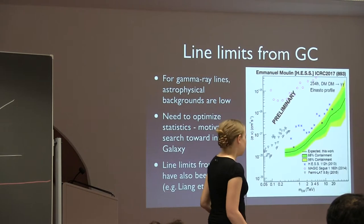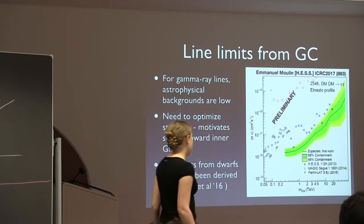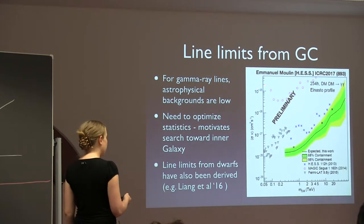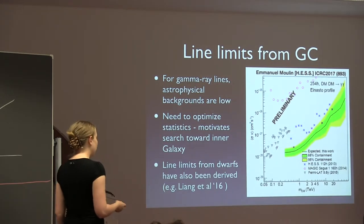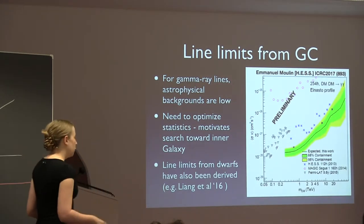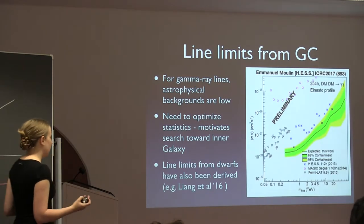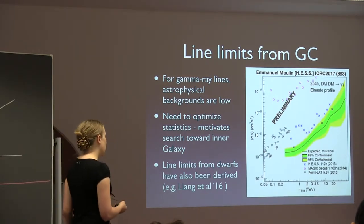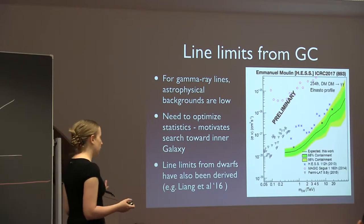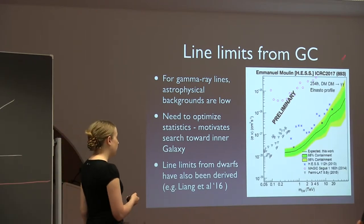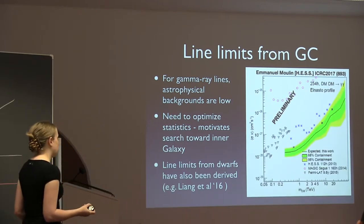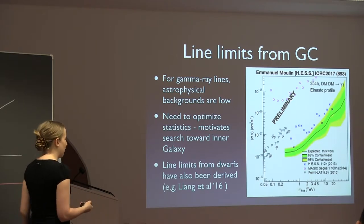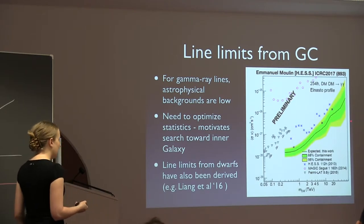These cross-sections are well below thermal relic, but we don't expect dark matter's dominant annihilation channel to be into gamma-gamma. For thermal relic dark matter, the branching ratio to gamma-gamma would typically be small — around 10^-3 or less — because it's loop suppressed. That's why these constraints don't immediately rule out a bunch of thermal relic dark matter models.